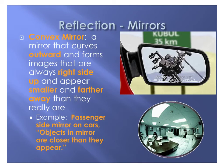The convex mirror curves outward and forms images that are always right side up. The images appear smaller and farther away than they really are. This is why we use the example of the passenger-side mirror on cars, which says 'objects in mirror are closer than they appear.' That warning lets the driver know that even though it may look like there's a safe distance to change lanes, they should check over their shoulder, because that mirror shows a wider range but distorts distance.